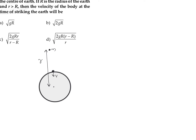For the calculation of its velocity, we can use conservation of energy. We write total energy initial equal to total energy final. The total initial energy is kinetic plus potential. The initial potential energy is minus GMm divided by r, where M is the mass of the Earth, and the initial kinetic energy is zero.